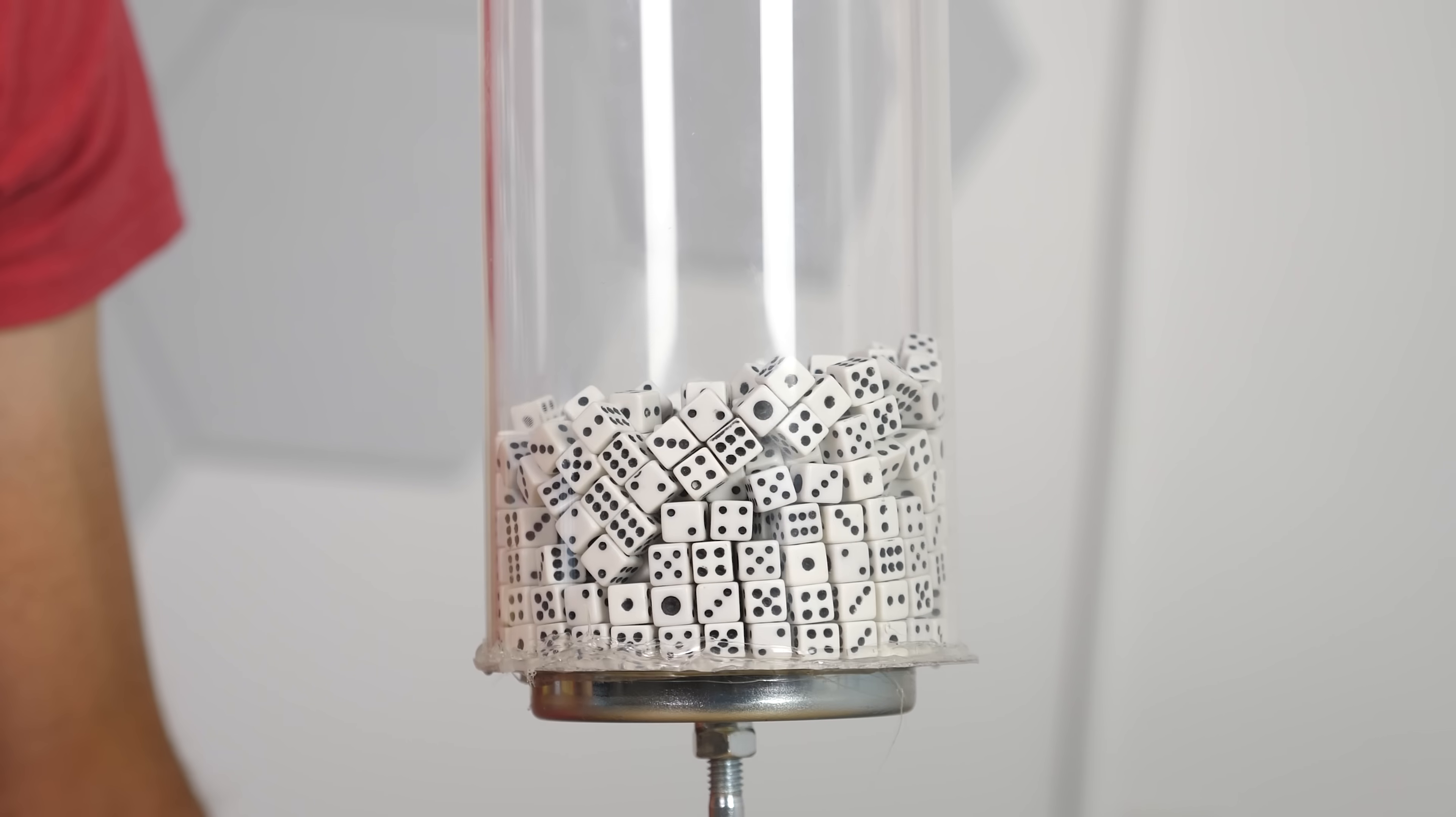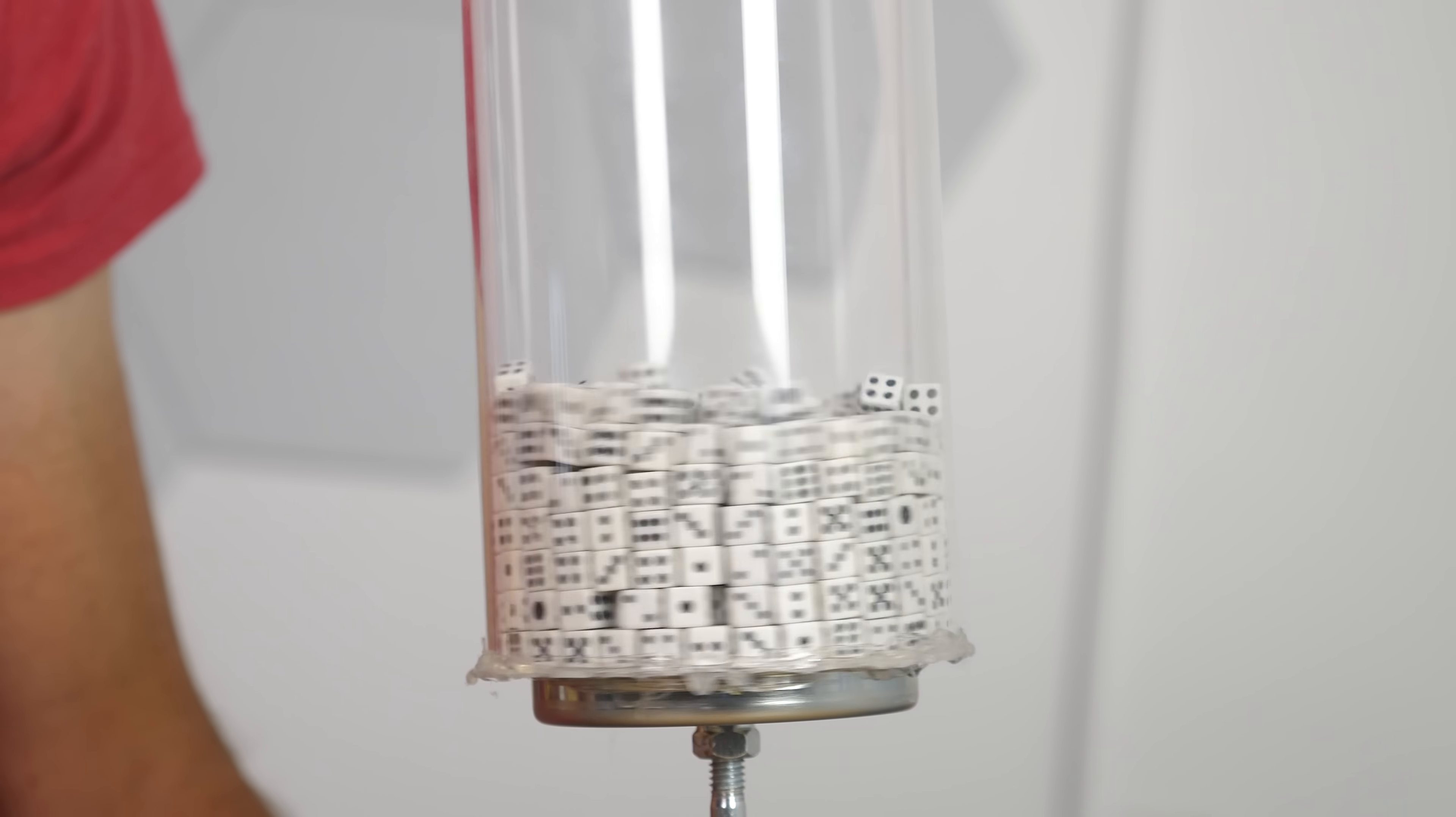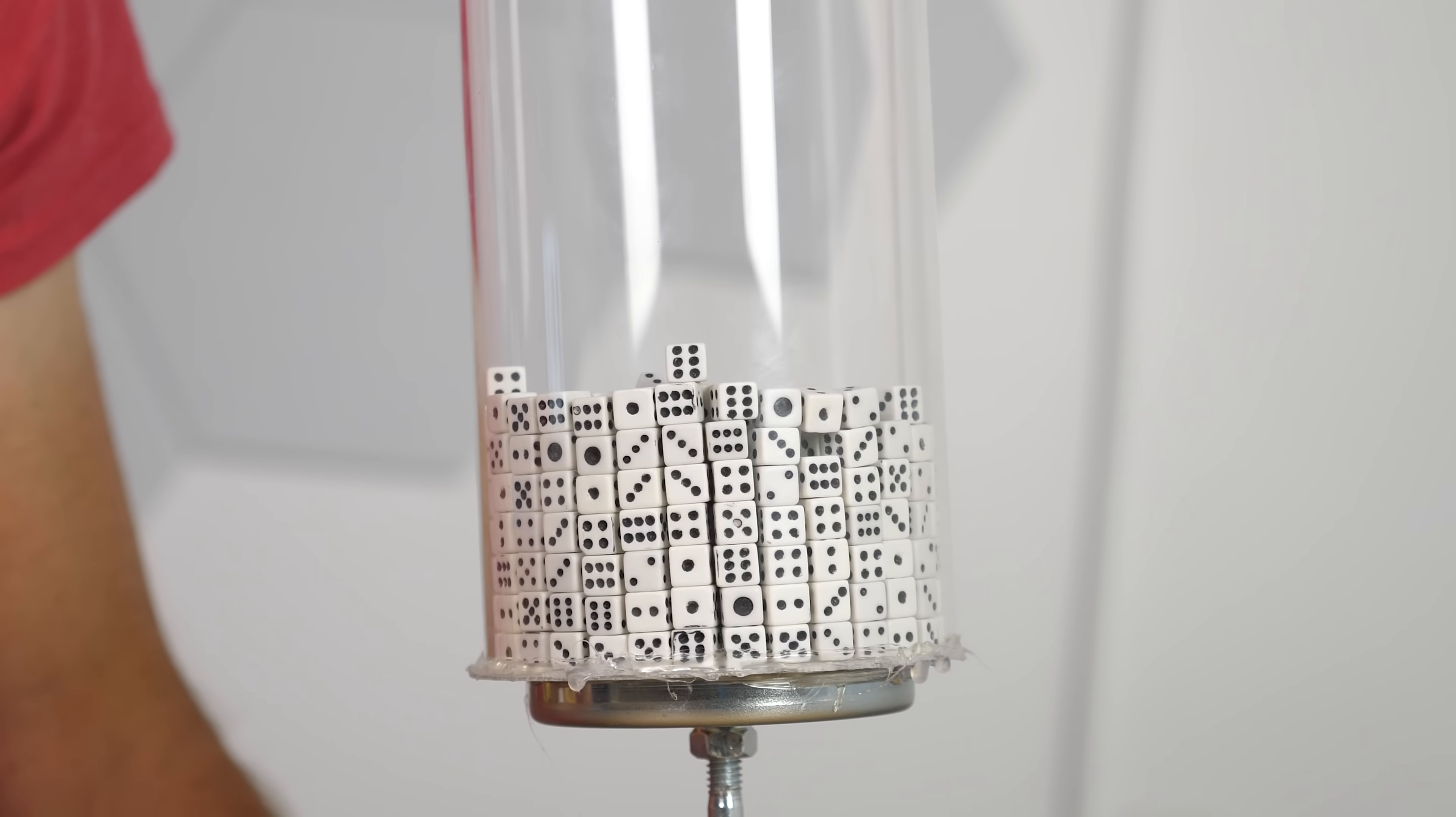Let me show you why this is by first starting with a bunch of disorganized dice in a jar. Normally, to get stuff to pack down better, you have to tap it. Tapping works great for spheres, but not for cubes. For cubes, you have to twist them.